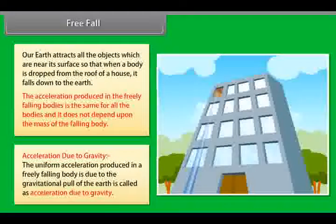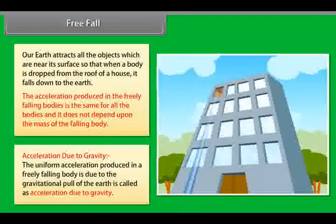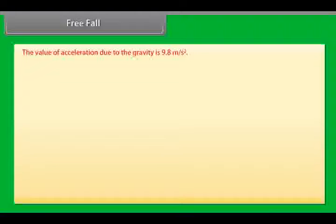Acceleration due to gravity: the uniform acceleration produced in a freely falling body due to the gravitational pull of the earth is called acceleration due to gravity. The value of acceleration due to gravity is 9.8 meters per second square.